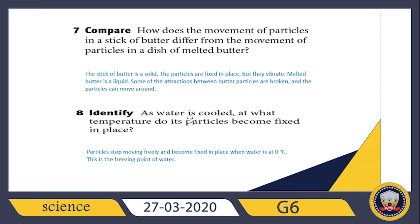Last question: as water is cooled, at what temperature do the particles become fixed in place? When you cool water, you change the state from liquid to solid — the freezing process. The particles lose energy, their motion decreases, and the distances between them decrease as they come close together and become fixed. This all happens at the freezing point of water, which is zero degrees Celsius.